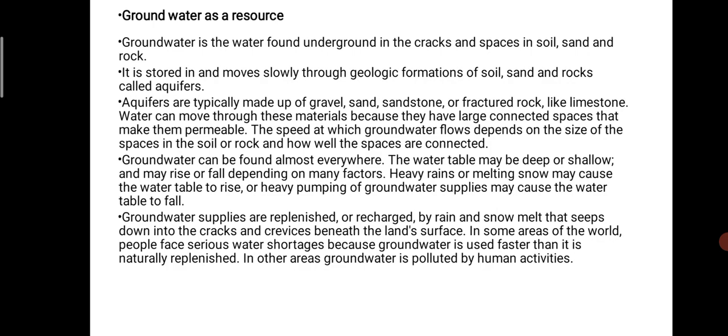Groundwater stores and moves slowly through geological formations of soils, sand and rock. These are called aquifers. Aquifers are typically made of gravel, sand, sandstone or fractured rock — like limestone — which makes them permeable. The speed at which groundwater flows depends on the size of the spaces in the soil and rock, and how those spaces are connected.